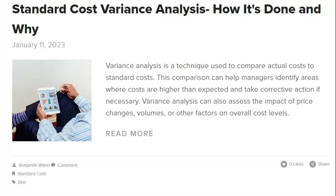Flexible variance analysis compares actual activity results with the flexible budget, which is based on the assumption that production levels can vary, showing a surplus or deficit depending on actual production levels. A static variance will occur if production falls below the static budgeted level, while a flexible variance will occur if production falls below the flexible budgeted level. It is important to be aware of the Standard Cost Accounting System's limitations and always carry out variance analysis with these limitations in mind.